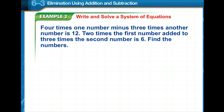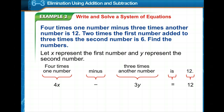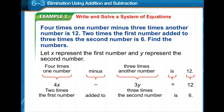Now we're going to write and solve a system of equations from a word problem. Look for patterns to help set up the equations. We have 4 times one number minus 3 times another number — that's 4x minus 3y — equals 12. Then 2 times the first number plus 3 times the second number equals 6, giving us 2x plus 3y equals 6. If you need to pause and reread the problem to see why we chose these equations, please feel free to do so.